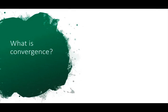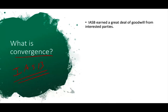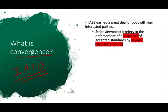So let's talk about convergence, because this is what the IASB was set to create. We have to accept that the IASB earned a great deal of goodwill from interested parties in accounting standard setting, securities regulation across the globe, and geographical blocks like the EU and FASB. What is convergence? Convergence could mean many things. We're going to look at it from three different perspectives. The first is the strict viewpoint: it refers to the enforcement of a single set of accepted standards by several regulatory bodies.